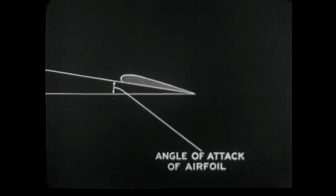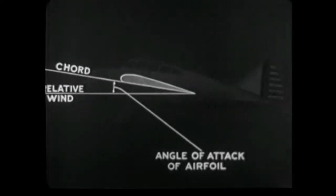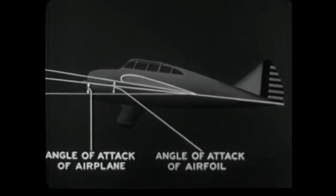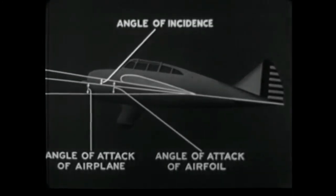The angle of attack of an airfoil was shown to be the acute angle between the cord of the airfoil and the relative wind. The angle of attack of the airplane as a whole is the acute angle between the longitudinal axis of the airplane and the relative wind. The difference between these two angles is constant for any given airplane and is called the angle of incidence.